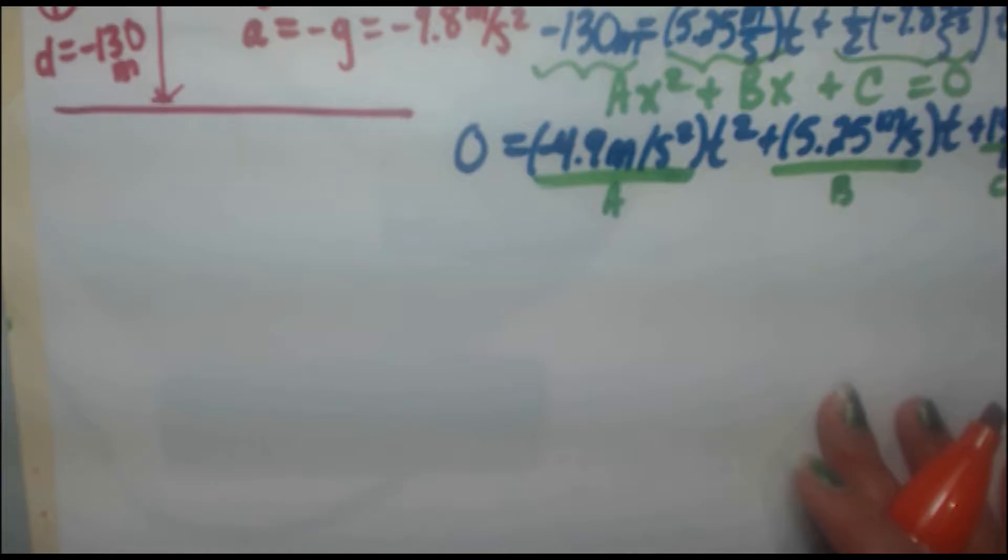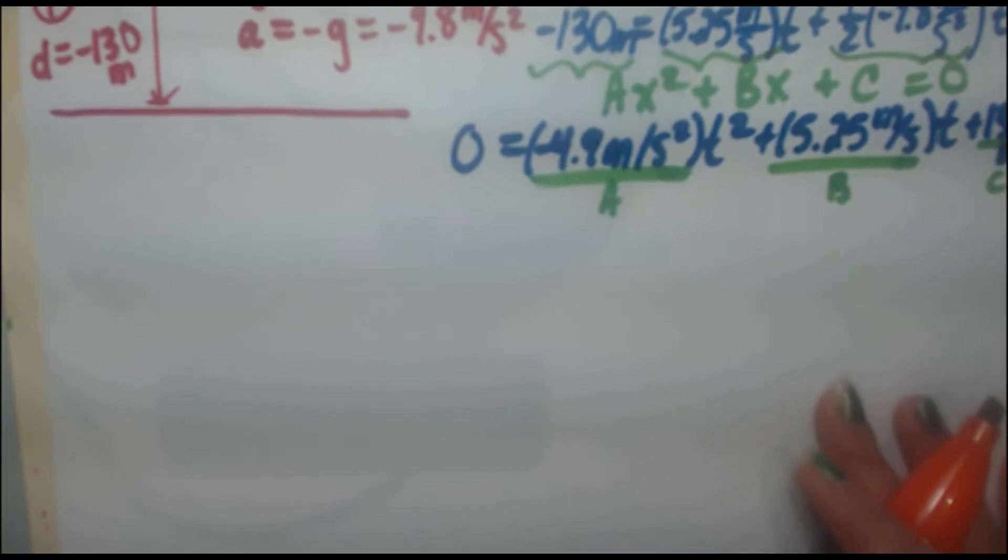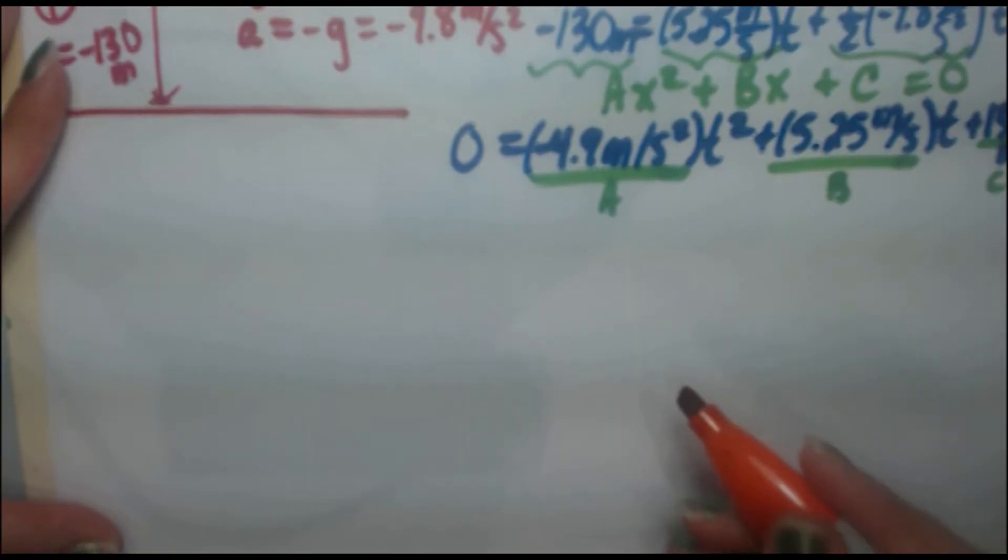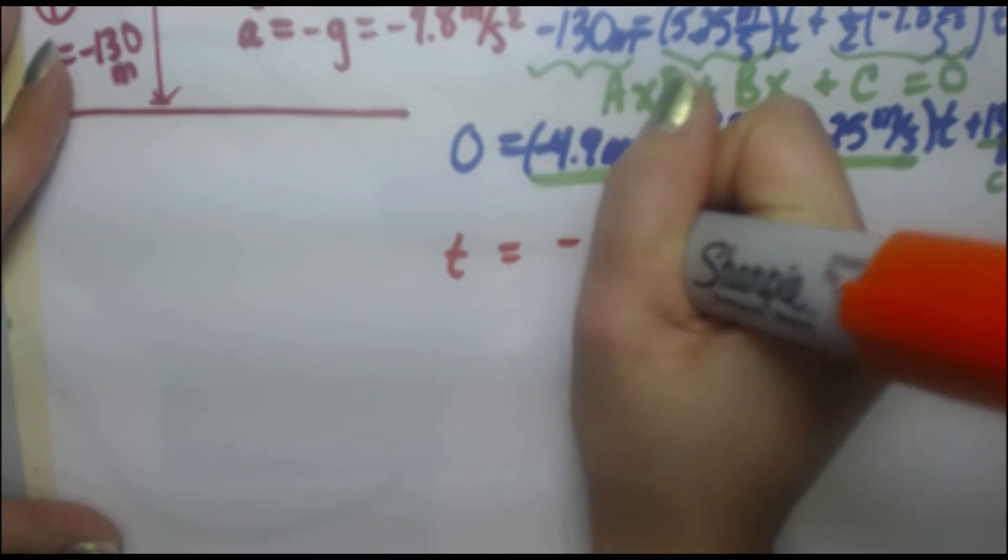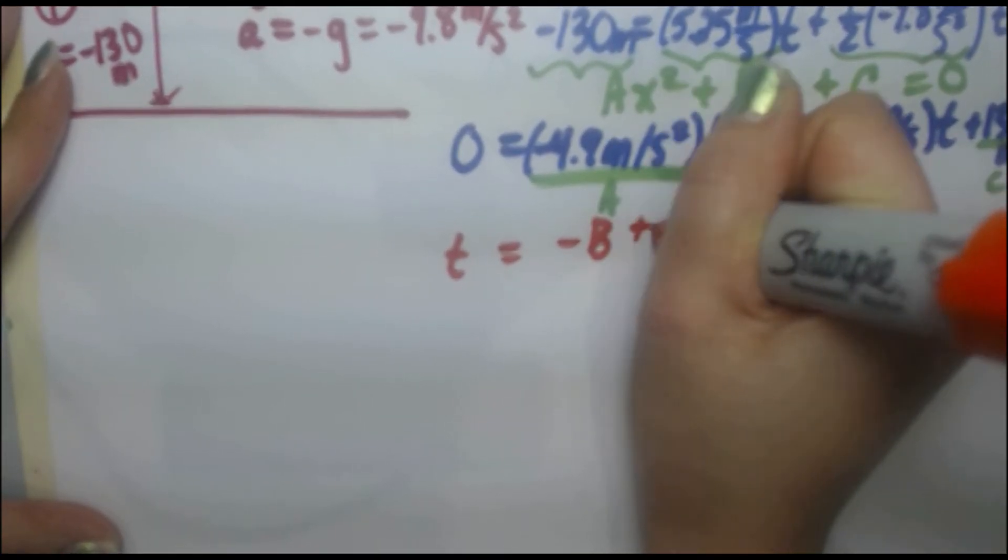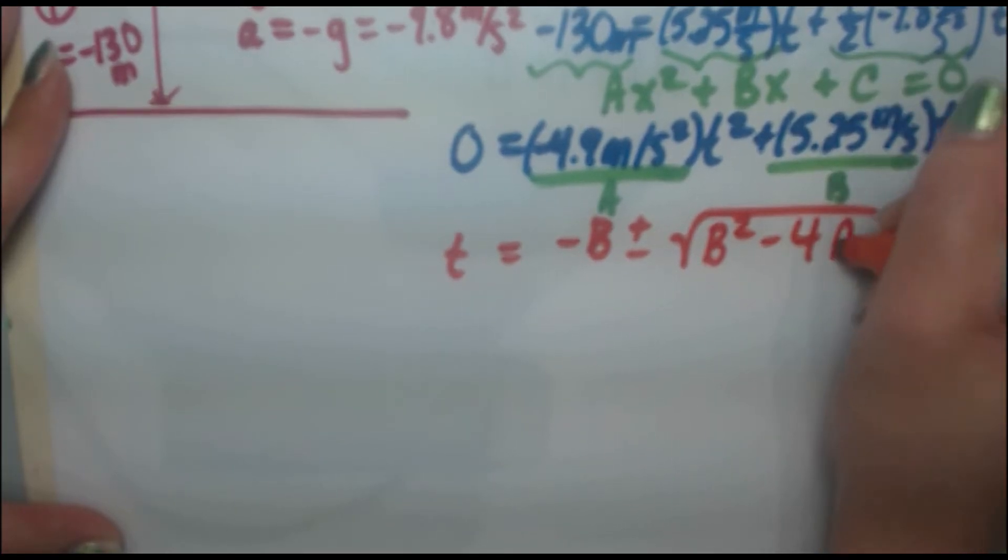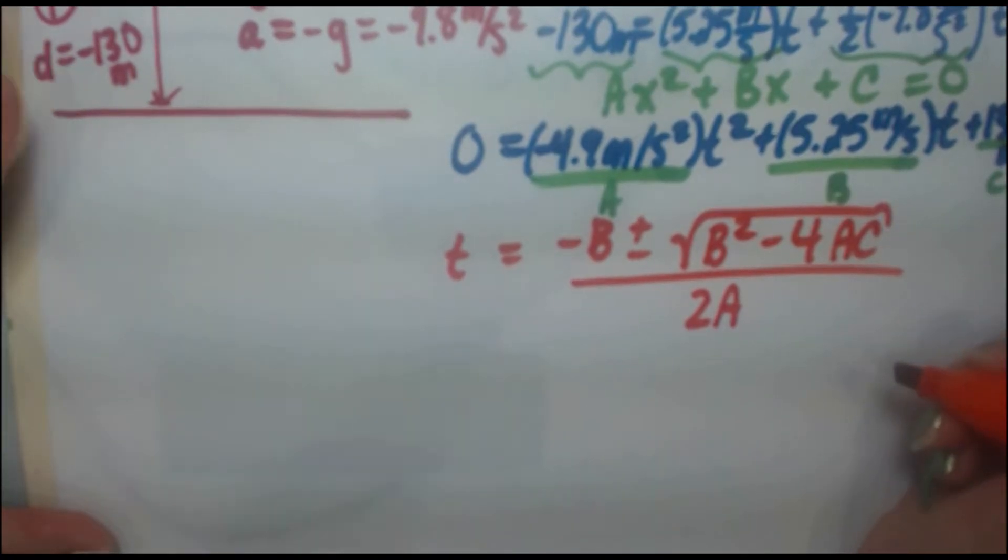So thank you for putting up with that. My grade 10 math teacher sang that to me and I've never forgotten it. So as silly as it sounds, it's like those Bill Nye videos. The music videos still teach you. So here we go. We don't have an x here. We've got a t. So t equals negative b plus or minus square root b squared minus 4ac all over 2a. And that's it. You just plug in your values.